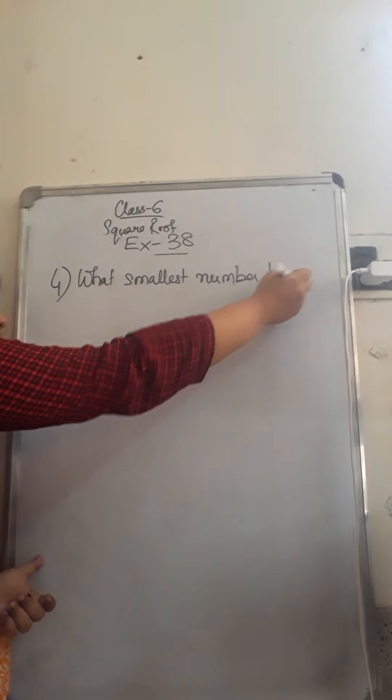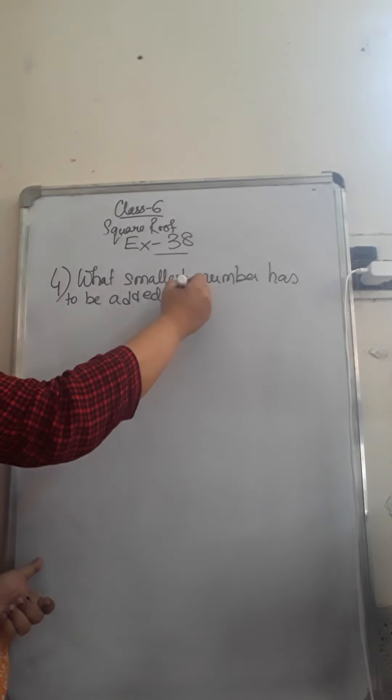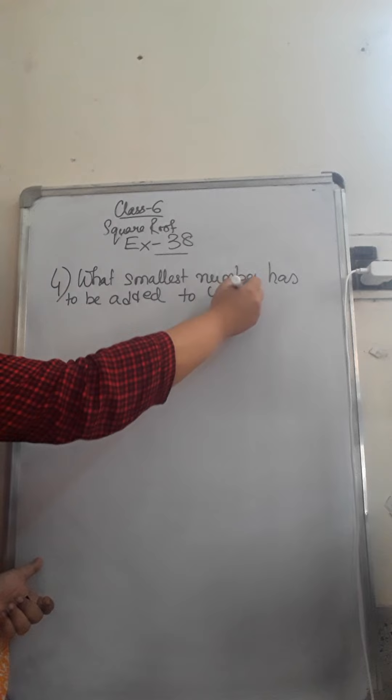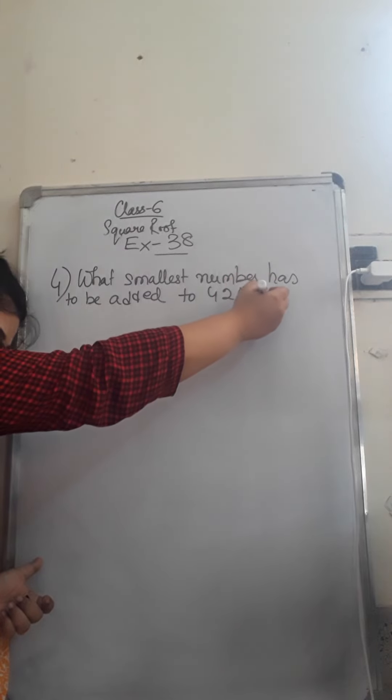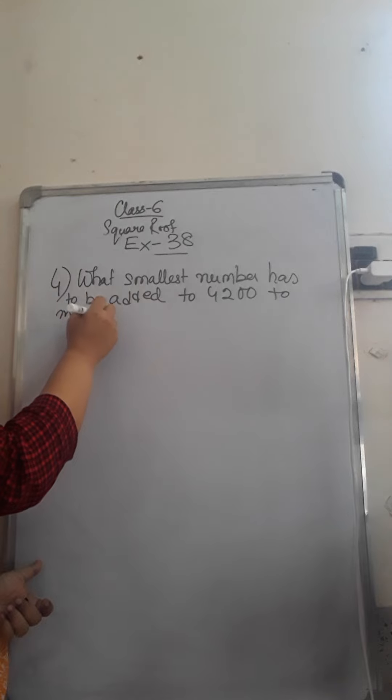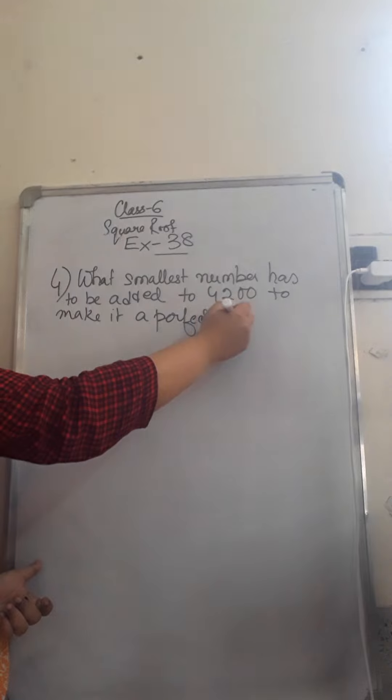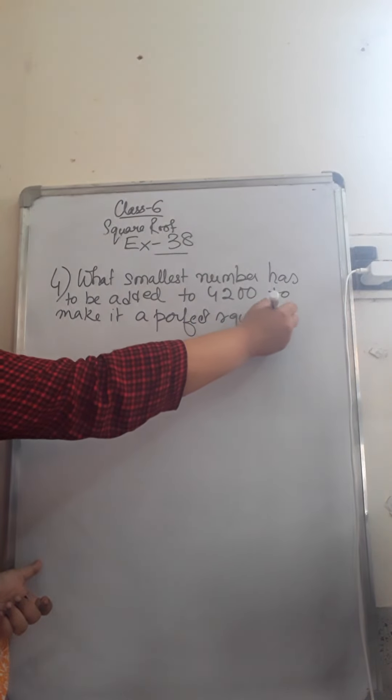What smallest number has to be added to 4200 to make it a perfect square number?